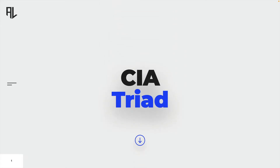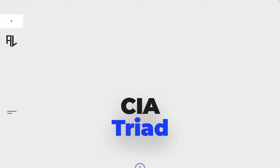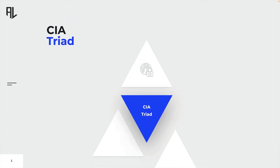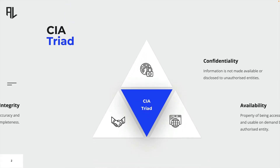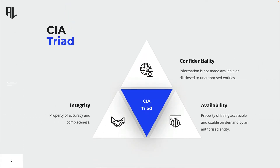To pick up where we left off, let's learn more about the CIA triad. The CIA triad is a model that represents the three fundamental security goals of any organization: confidentiality, integrity, and availability.